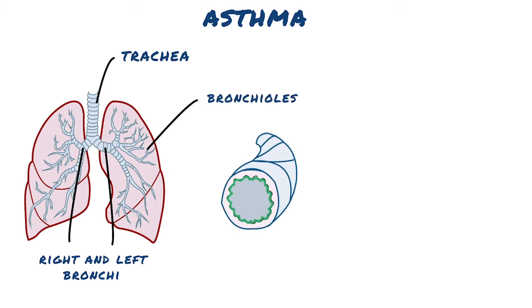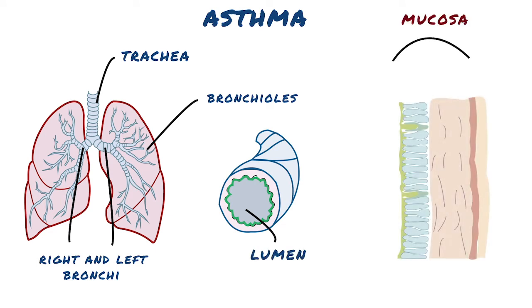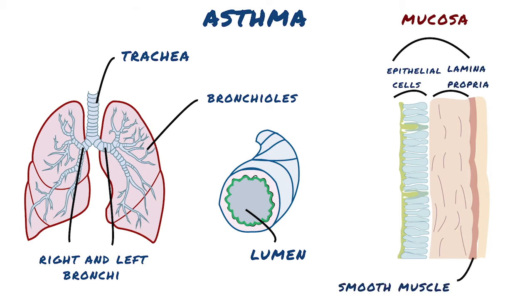In the bronchioles, you've got the lumen, the mucosa — which includes the inner lining of epithelial cells as well as the lamina propria — and the submucosa, which is where the smooth muscle lives.